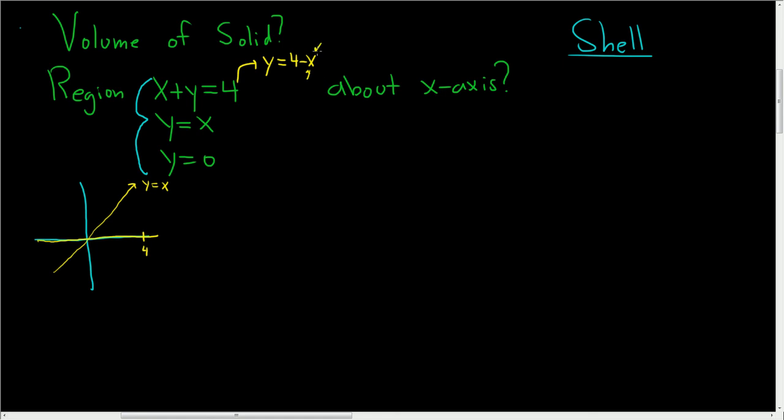And if we plug in 0 here, we're going to get 4. So this is 4. So it's going to look something like that. So it looks like our region is this triangle here. And this line here is y equals 4 minus x. Or if you prefer, x plus y equals 4.